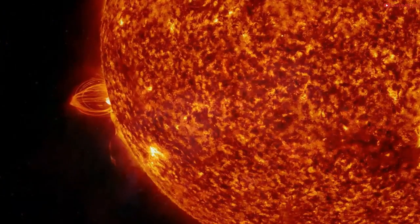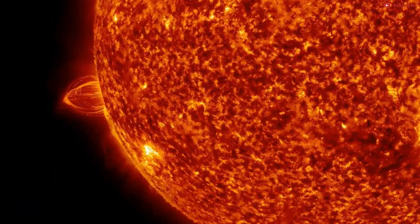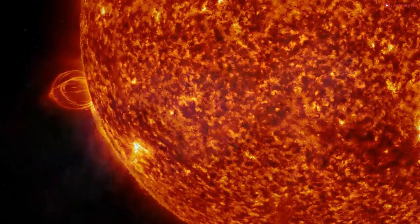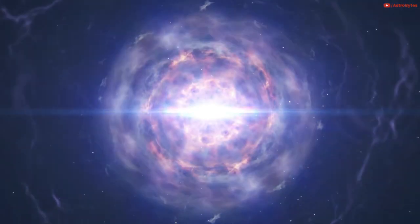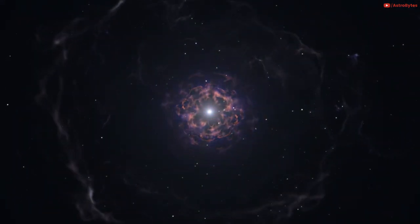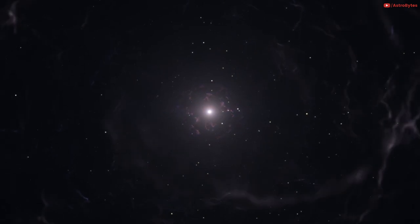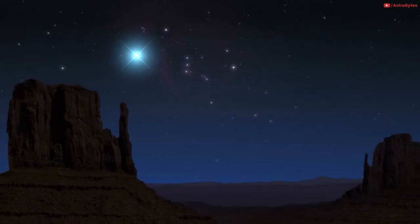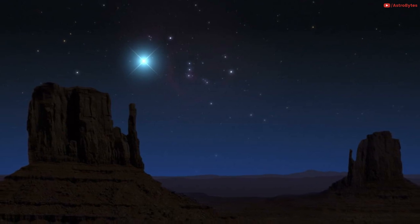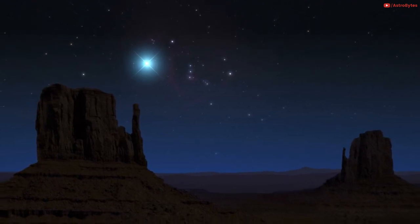Betelgeuse is only 8 million years old. Astronomers suspect that it would live for another 100,000 years, after which its core would collapse into a super-dense neutron star. This supernova explosion might appear as bright as the full moon when seen from Earth. The supernova will last for several months and would even be visible during the day, since the star is 700 light-years away from Earth.